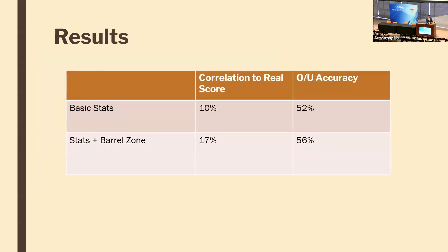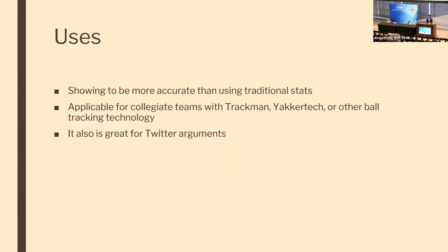Here's how the simulation worked out — correlation jumped 70% to 17%, and over-under accuracy increased to 56%. This is really exciting because there are uses at all levels of the game. Any program with access to Hawkeye, YakurTech, or TrackMan can utilize this data.